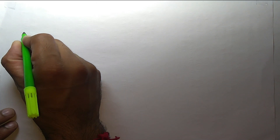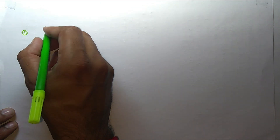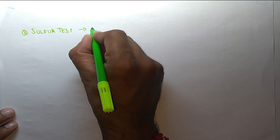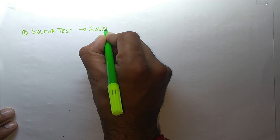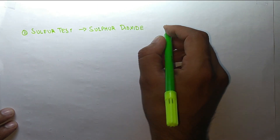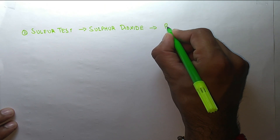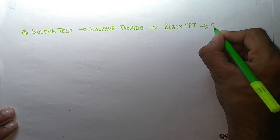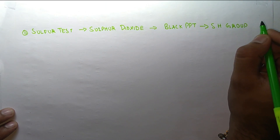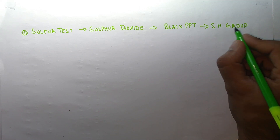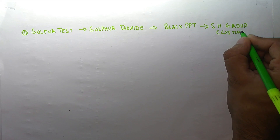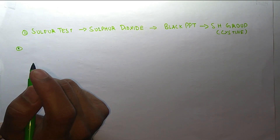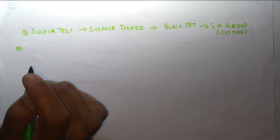There is one more important test — the 11th test — which is the Sulfur test. In this we use sulfur dioxide. The color observed is a black precipitate. It confirms the sulfhydryl group, which is present in cysteine. Additionally, note that sulfosalicylic acid, Heller's nitric acid ring test, and heat coagulation tests are used for albumin.